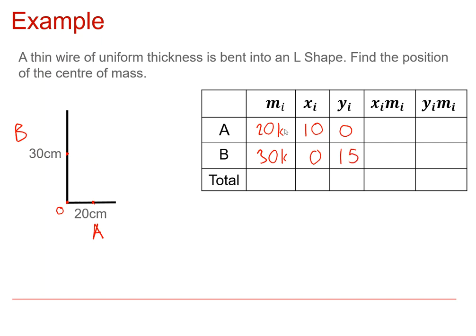So multiplying the 20k by the x-coordinate gives us 200k. And then obviously 0 for y times the mass, and then for shape B, we have 0, and then 30 times 15, which is 450k. We then need to add these up. So total mass is 50k. And sum of these values is 200k. The sum of these is 450k.